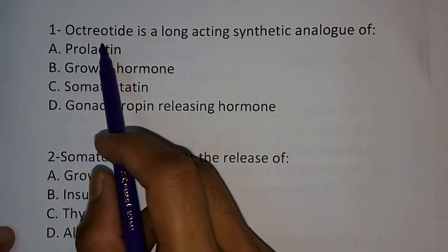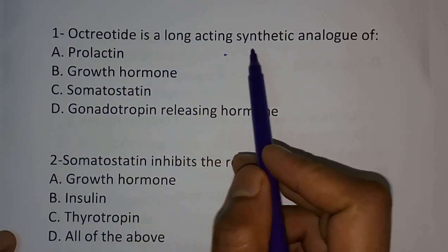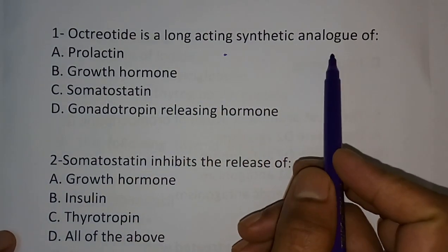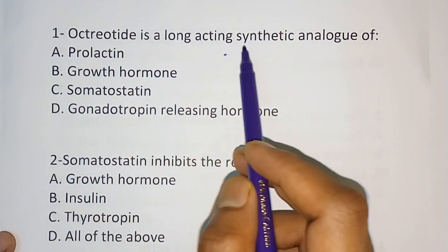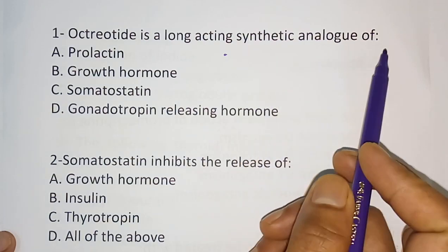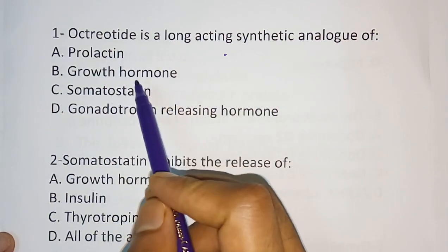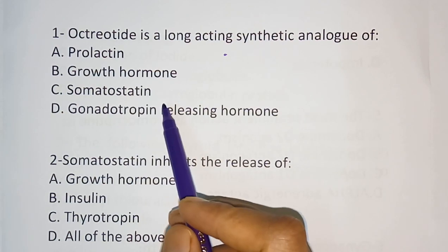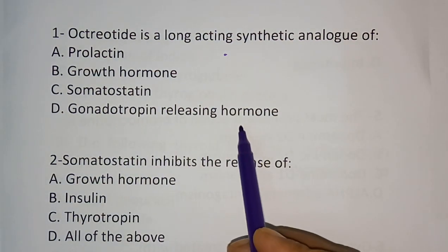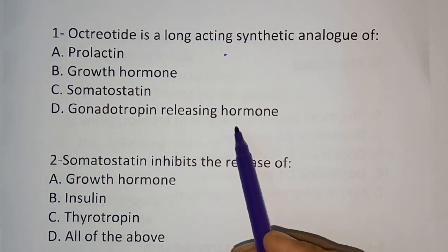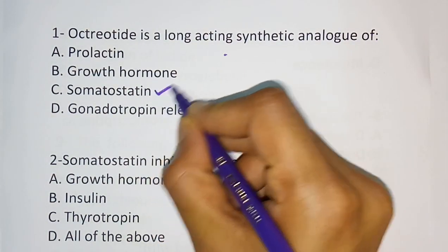Question number one: Octreotide is a long-acting synthetic analog of — options are prolactin, growth hormone, somatostatin, or gonadotropin releasing hormone. The correct answer is somatostatin.